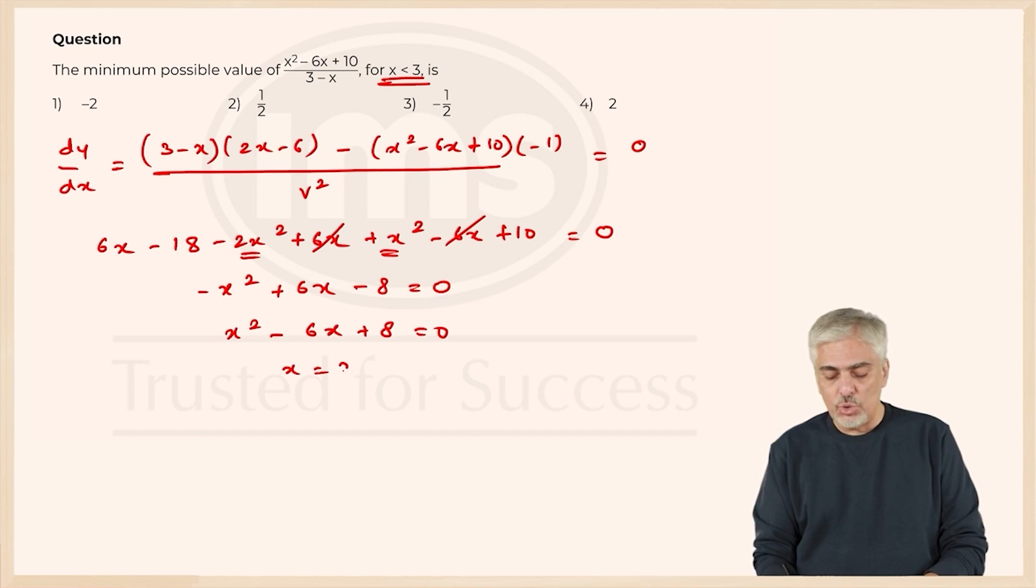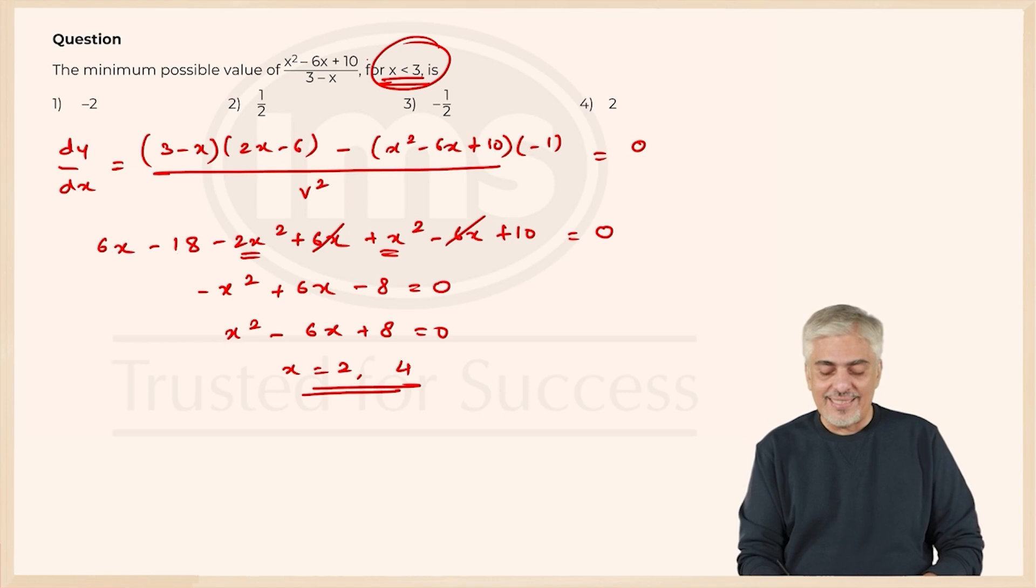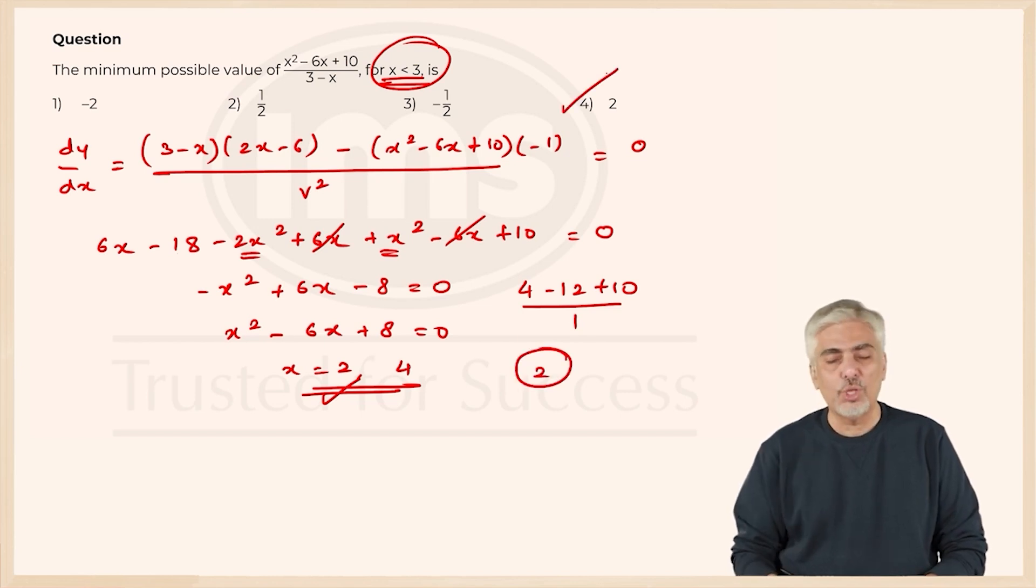So I get x is 2 or x is 4, x cannot be 4 because they said x is less than 3, so x is 2. Just put the value in the question of x as 2, so I will get 4 minus 12 plus 10 upon 1, that will be 2 upon 1 which is 2 and hence I get my answer as the fourth option.